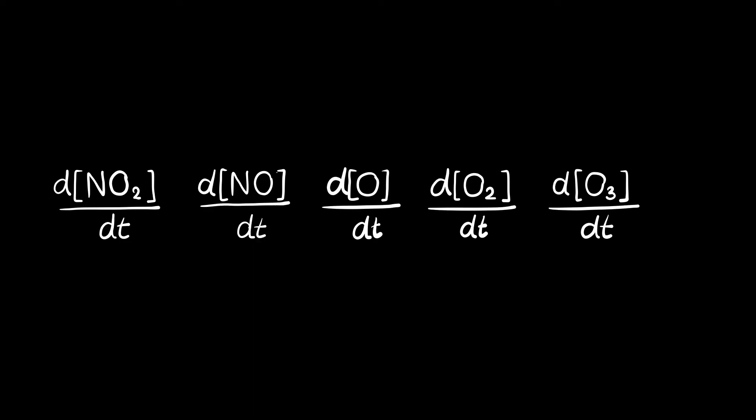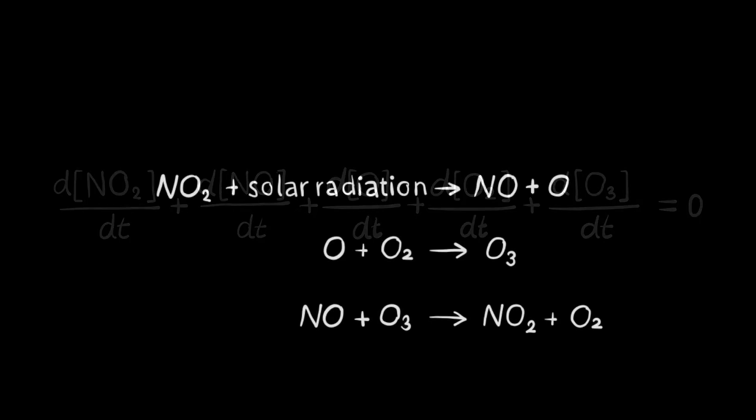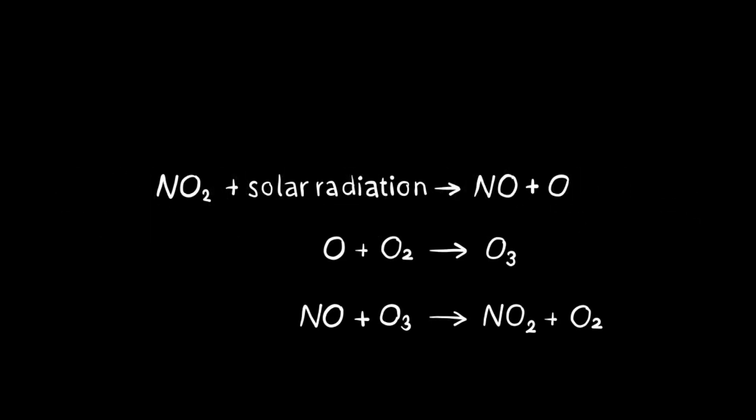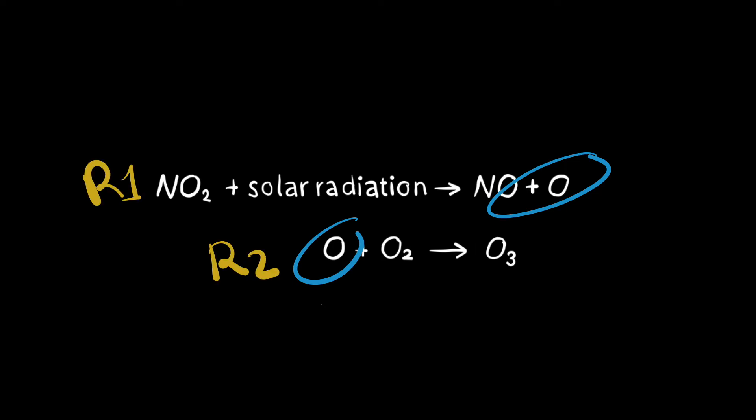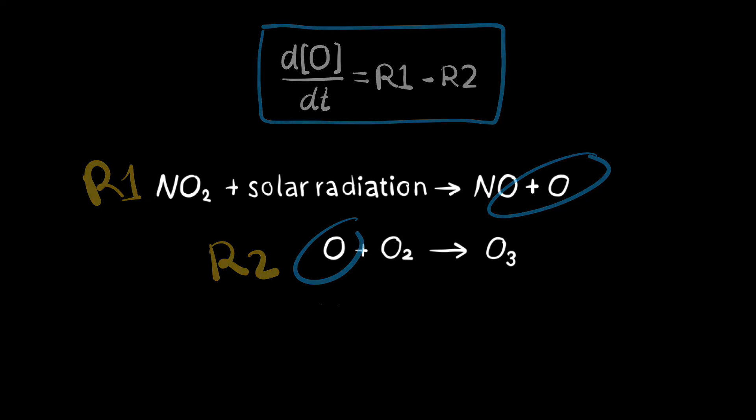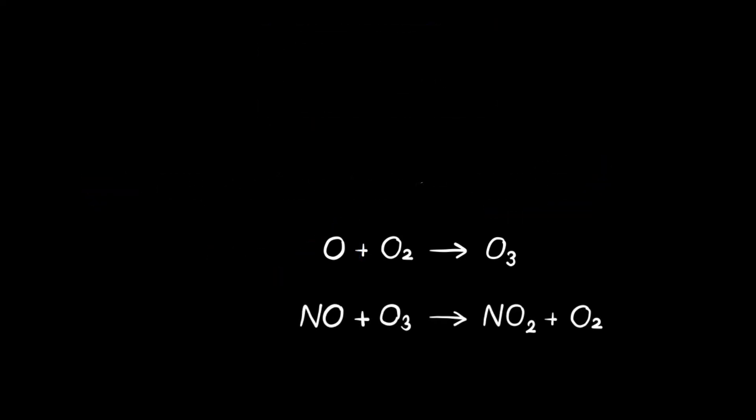For these variables, we need to write the mass balance equations, which are again given by the incoming and outgoing flows. For example, the change in atomic oxygen is given by reaction 1, in which atomic oxygen is created, minus reaction 2, in which atomic oxygen is used. The change in ozone is given by reaction 2 minus reaction 3.